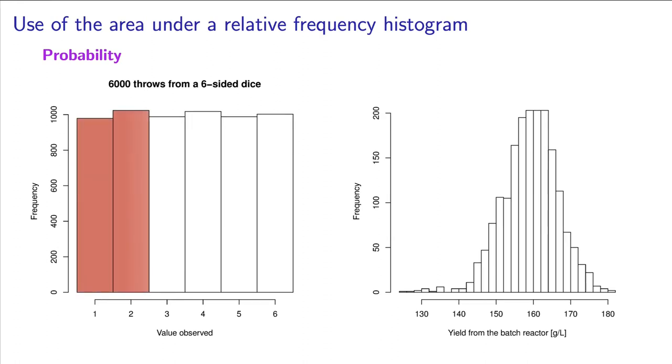It all comes down to the fraction of the area under the histogram. In the dice example, the bars for 1 and 2 represent about 33% of the area. So the probability of observing a 1 or a 2 is about 33%. That is an intuitive concept that you're likely familiar with already.